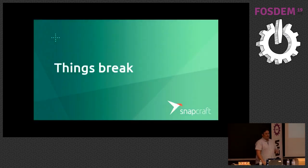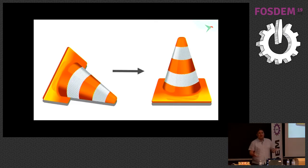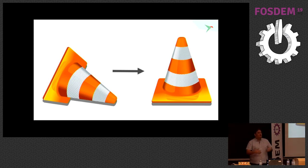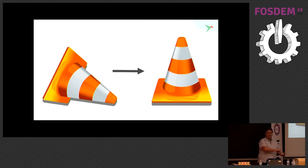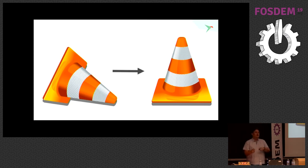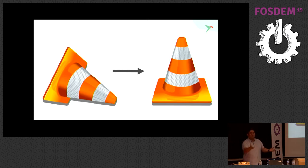Things do break, however. Bugs happen and sometimes an application will fail. If an update goes bad — a new version has been pushed to the store and those updates are pushed out to users — health checks can be used to detect that and roll back. Snap keeps the previous release of every application around, so in the event of an upgrade failing it can just go back to the previous release. In addition, if you discover a problem with the current release you can manually force a revert — just type 'snap revert VLC' and it will go back to the previous release. Then you can move forward later when that bug you're tracking has been fixed.